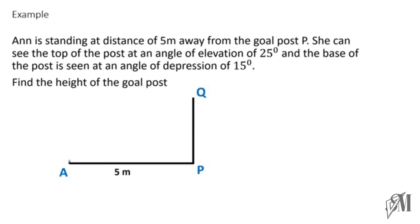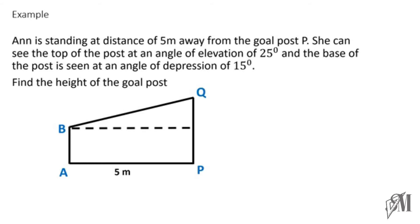PQ is our goal post. Ann is marked with a horizontal line showing her eye level — the eye level is always parallel to the ground. According to the description, I mark the angle of elevation: when she looks at the top of the post, this angle is 25 degrees. Similarly, when she looks down at the base, it is 15 degrees.